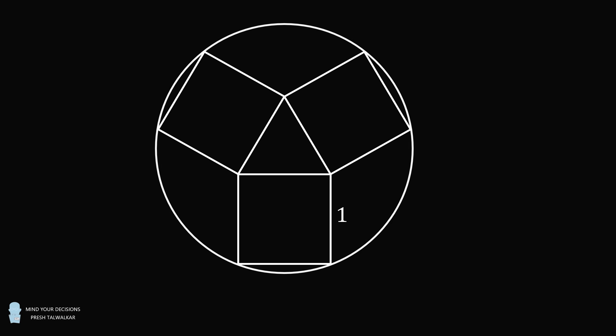Hey, this is Presh Talwalkar. Three squares are constructed on the three sides of an equilateral triangle. Each square has a side length equal to 1. A circle is circumscribed about these three squares. The question is what is the radius of the circle?